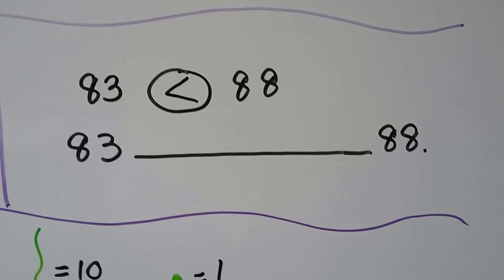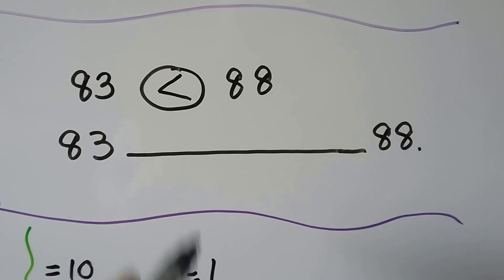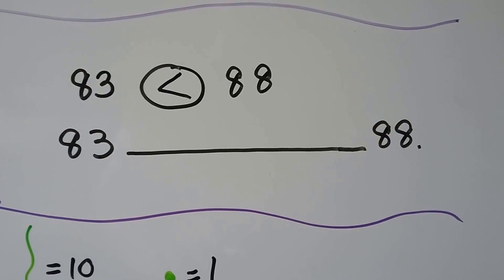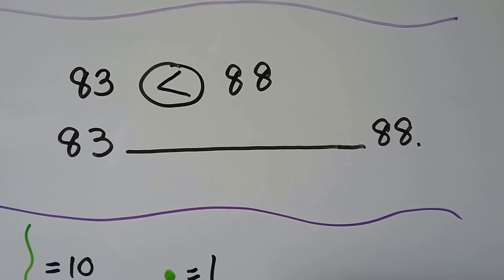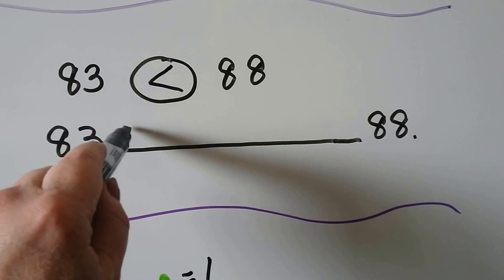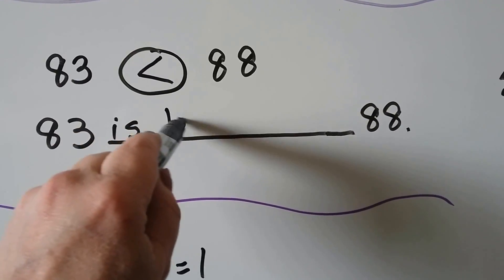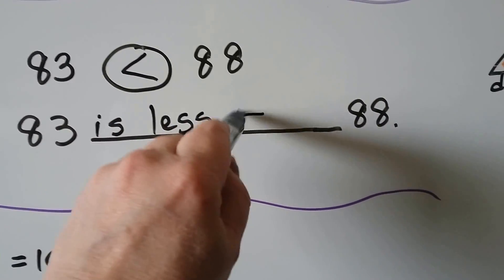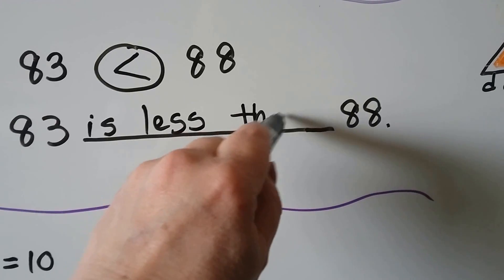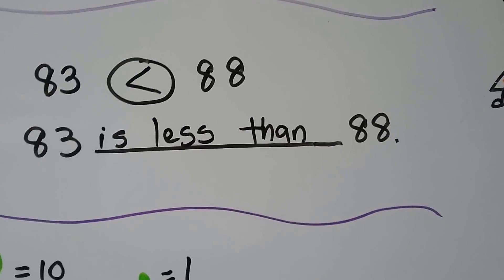83 is less than — we put the point facing the small number 83, and the big open side facing the larger number. 83 is less than 88. We can write: 83 is less than 88.